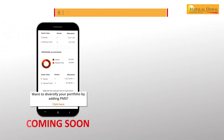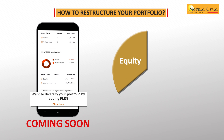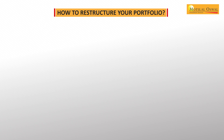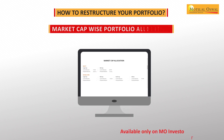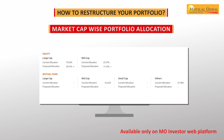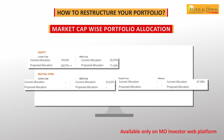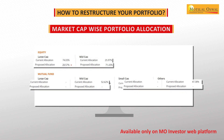You can view and compare detailed asset-wise allocation and returns of your current portfolio versus that of the proposed portfolio. You can also diversify your portfolio by adding PMS and mutual fund asset classes other than equity. Our next section is market cap wise portfolio allocation that will show you your current allocation versus proposed allocation and detail based on market caps for different asset classes in your portfolio.